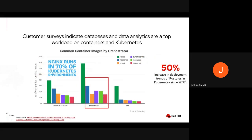Datadog, which is a leading monitoring service for cloud-scale applications providing monitoring of servers, databases, and services, in its 2019 report analyzed more than 1.5 billion containers run by thousands of Datadog customers. According to this survey, databases such as Postgres are running in more than 30% of containers in orchestrated environments, closely followed by data analytics software such as Elasticsearch and the MongoDB database at more than 20%. This shows that a significant number of workloads running on Kubernetes are databases and data analytics. There is also a growing trend, with a 50% increase in deployment of Postgres in Kubernetes from 2018 to 2019.